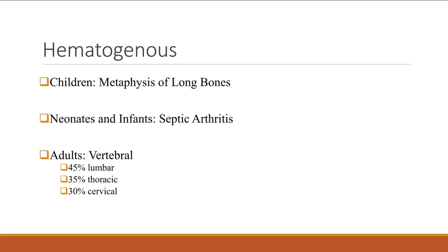During my fellowship, before pediatric ID existed, we consulted in the NICU. I never forget the picture of a baby that had lost an entire bone because of hematogenous osteomyelitis — one of those x-rays I have never forgotten. In children, the infection can go from bone to joint, causing septic arthritis. If osteomyelitis is not treated well in childhood, it can reactivate as chronic osteomyelitis in an adult long bone.